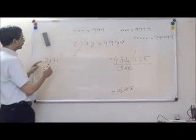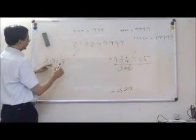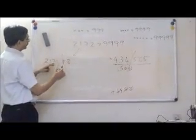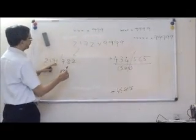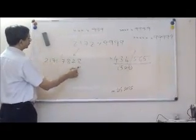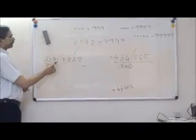9 minus 2 is 7, 9 minus 1 is 8, 9 minus 7 is 2, 9 minus 8 is 1. So the final answer is 2177, 7, 8, 2, 1.